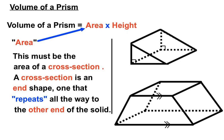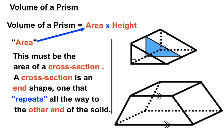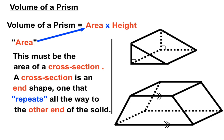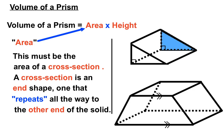Let's have a look at what a cross-sectional area is. There are two shapes here: a triangular prism and a trapezoidal prism. The end shape of the triangular prism is a triangle. As you click through the animation, you can see the triangle keeps its shape all the way through to the other end — repeating in that direction. We'd call that triangle the cross-sectional shape of the triangular prism.